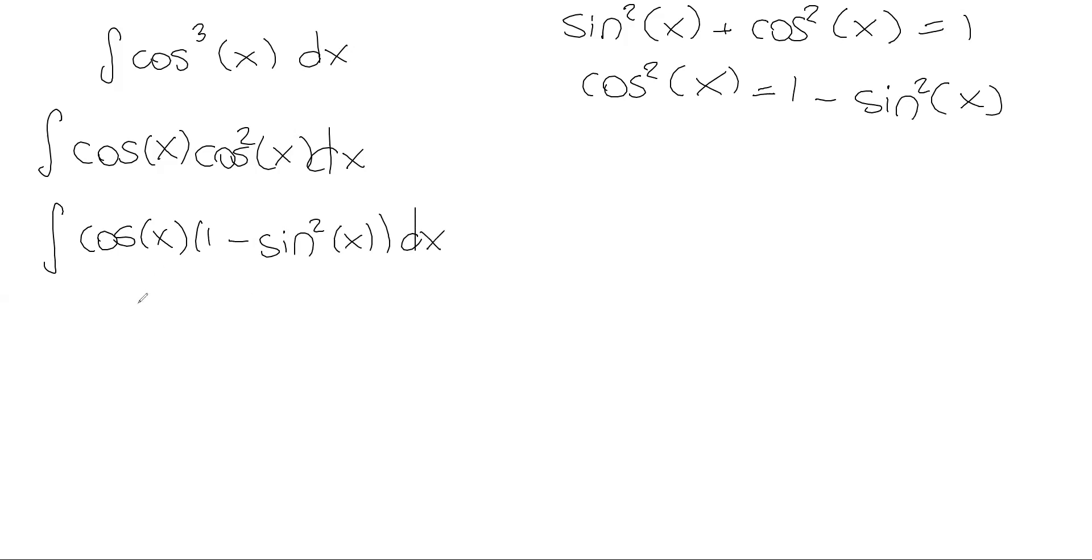So rewriting the integral gets us this. And then it may not be obvious why this is helpful, but let's just distribute first and see why this works out really well. So we have cosine of x, and then we have minus sine squared of x times cosine of x. From here, I want to break it up into two separate integrals, the first of which would be cosine of x dx, and then the second of which would be negative sine squared x cosine of x dx. We've taken an unusual function and we were able to rewrite it in terms of something we do know how to integrate very easily. Of course, the antiderivative of cosine is sine of x as always.